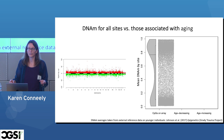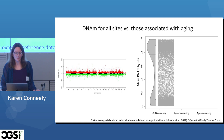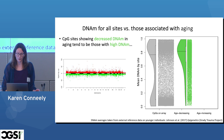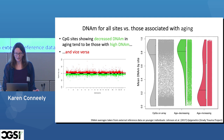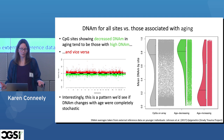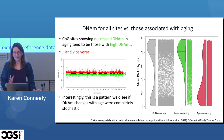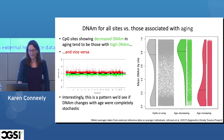The CpG sites showing decreased methylation with aging tend to be those with high DNA methylation — it's very striking — and the opposite pattern is observed for those showing increased methylation with aging, which start out very low. Interestingly, this is a pattern we would see if it were completely stochastic: CpG sites that are already high have nowhere to go but down, sites that are low have nowhere to go but up — everything goes toward entropy. This is consistent with what we know about aging; it doesn't mean the pattern is stochastic, there's evidence it's not, but it's consistent with it.